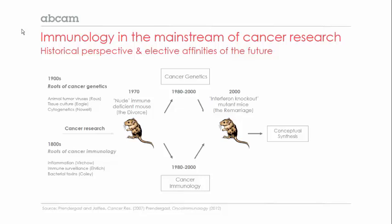This aspect of cancer is very old, and it was joined by other threads. The most dominant, of course, became the thread that led to cancer genetics. The roots of that field in the 1900s came from studies of animal tumor viruses by Rous, tissue culture studies later by Egle, and cytogenetics by Nowell and Hungerford also at Fox Chase.